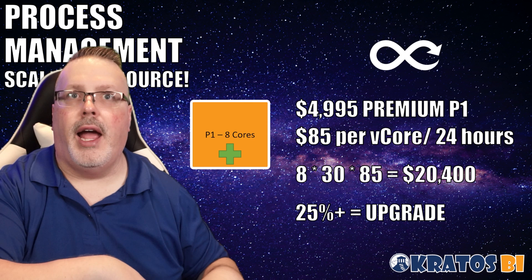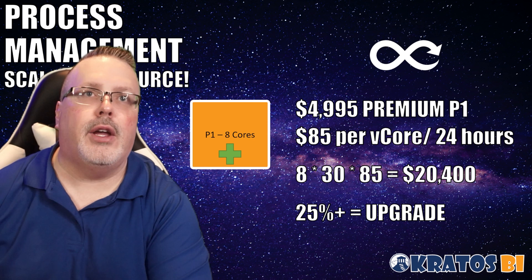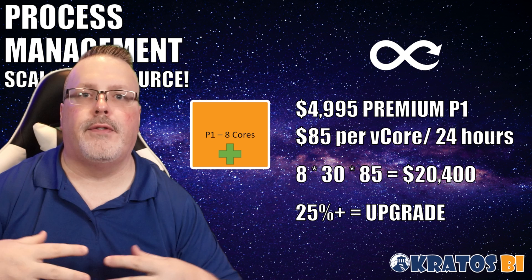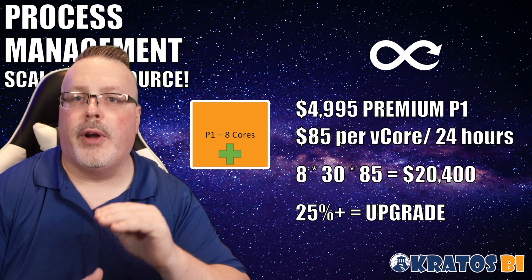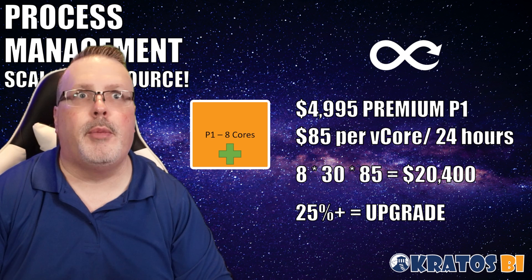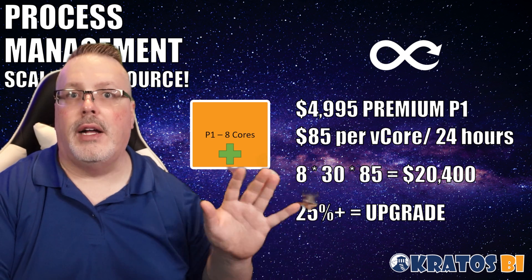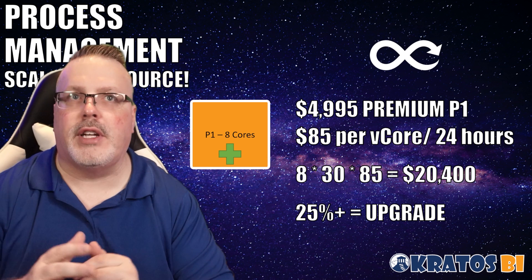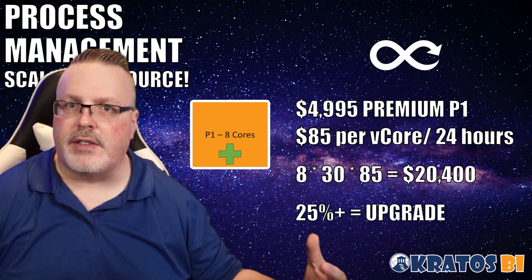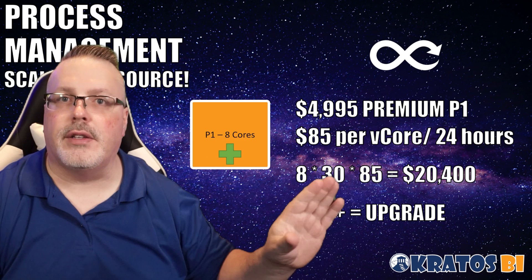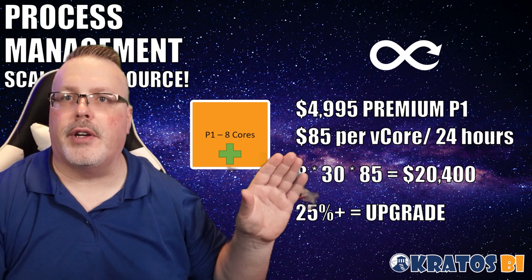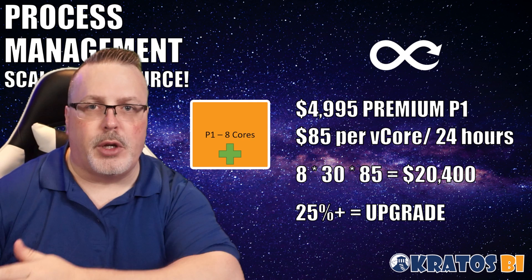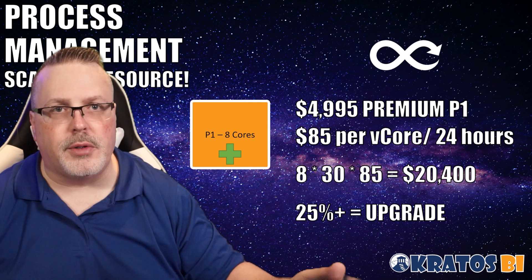If you had a P1 capacity and set it up so that you had eight cores available for overload and scale-out capabilities, and you ran that for an entire month, you would spend $20,000 on your scale-out. You should not do that — it's four times as expensive to be running the scale-out compute. So if you're hitting this and finding that you need this type of thing, you should 100% just be going from a P1 to a P2.